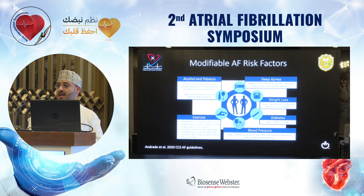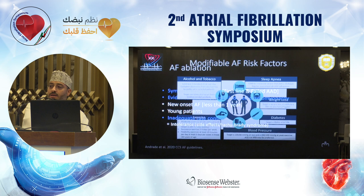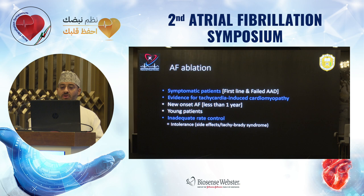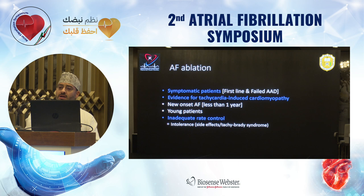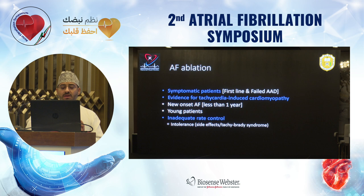Who are the patients we take to the lab? Straight from the guidelines: symptomatic patients whether on antiarrhythmic drugs or not, whether they failed antiarrhythmics or not, definitely patients with tachycardia-induced cardiomyopathy. Sometimes if these patients are very sick, we cardiovert them and start amiodarone for two months to see if ejection fraction improves. New onset AFib less than one year, young patients, and inadequate rate control by AV-blocking agents.